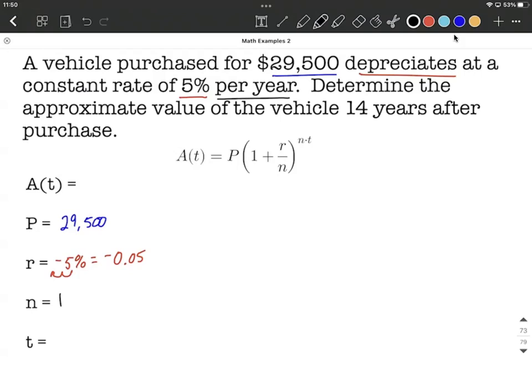Putting this all together into our formula, I am leaving out t right now, and I'm leaving A of t out. We want to create the formula first, and then we'll use it, and we'll fill in that 14 years to answer this specific question. So 29,500, that's what it started with as our principle. 1 plus negative 0.05 gets filled in for our rate, r. 1 gets filled in for n, and then 1 times t up in our exponent.